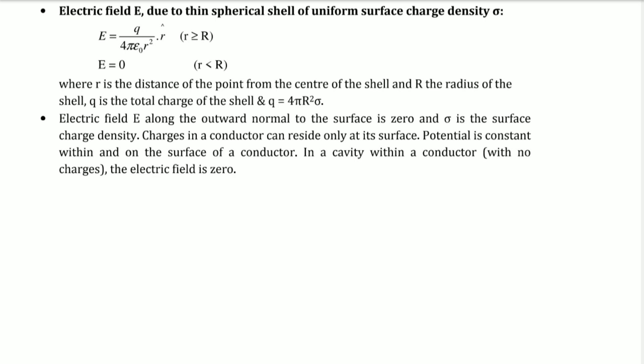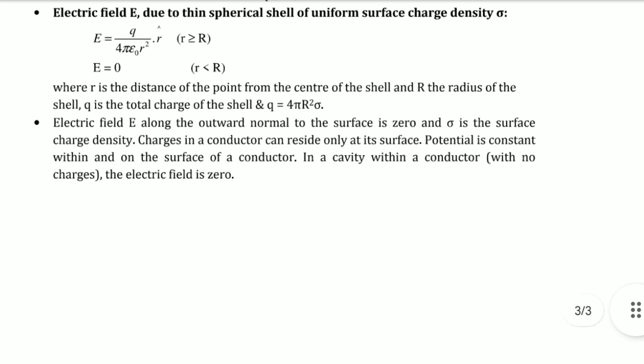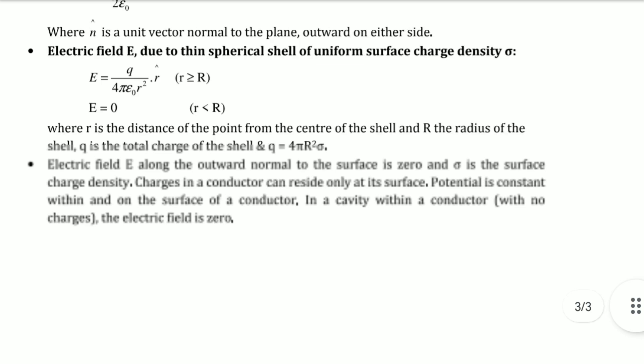Electric field E along the outward normal to the surface is σ/ε₀, where σ is surface charge density. Charges in a conductor reside only at the surface. Potential is constant within and on the surface of conductor. In a cavity within the conductor with no charges, electric field is zero.